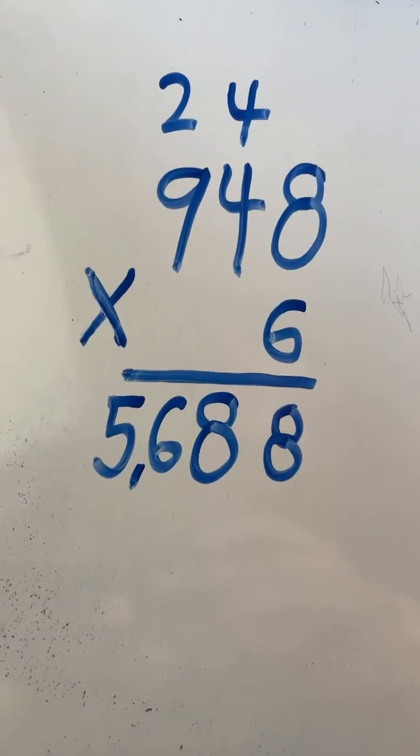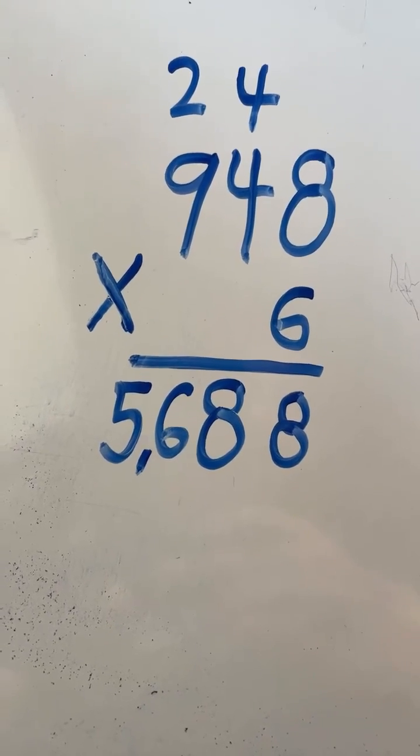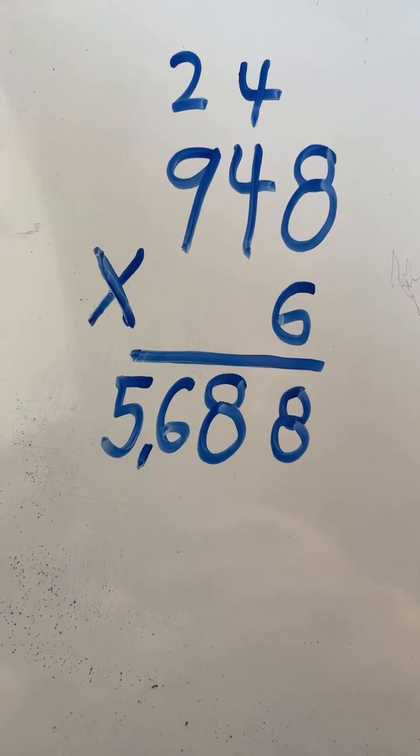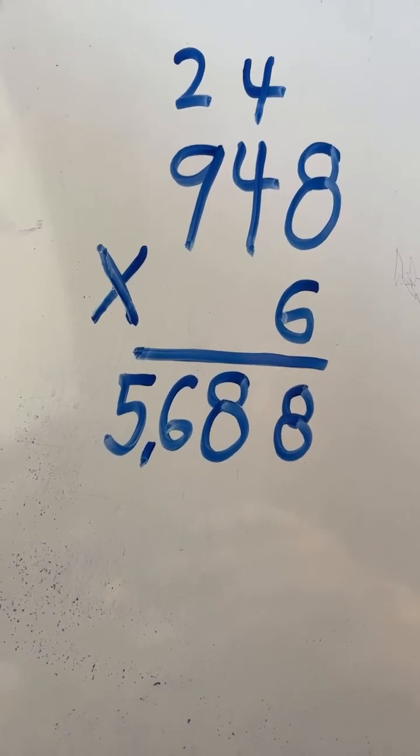And we have our final answer. 948 times 6 equals 5,688.